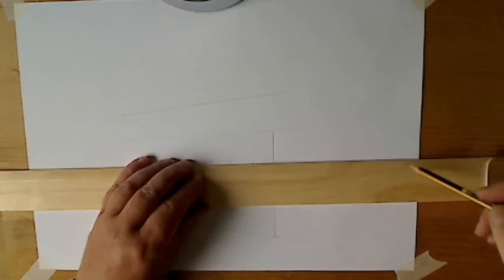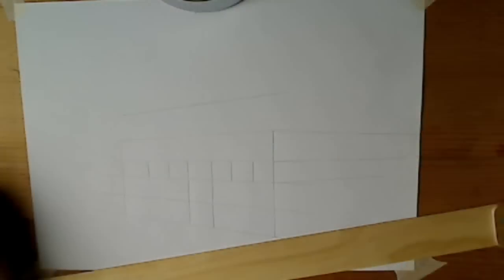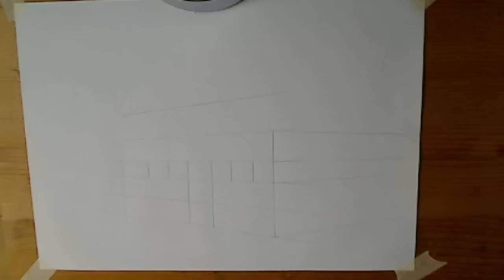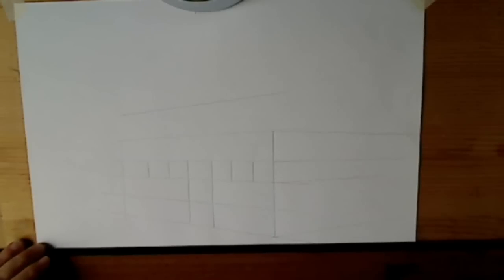If you wanted the same angle, that is the same slope towards the vanishing points, then you could use both sides of the blade of the T-square. Right, here's the other side of the building.